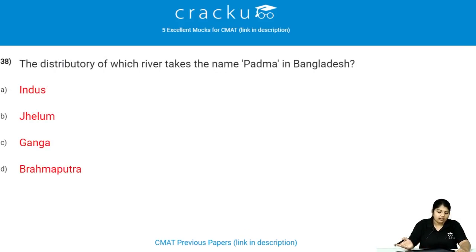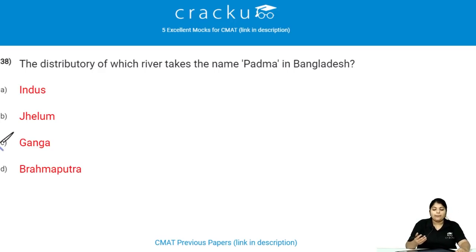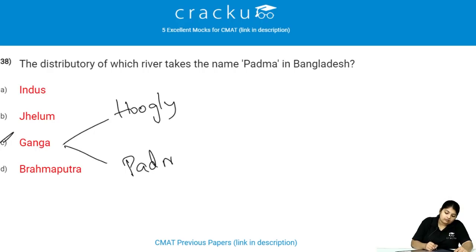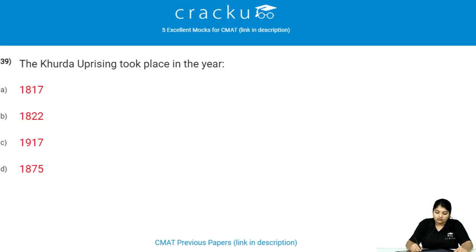The distributary of which river takes the name Padma in Bangladesh? The distributary of the Ganga river takes the name Padma in Bangladesh. The Ganga has two distributaries — one is the Hooghly and the other is the Padma.